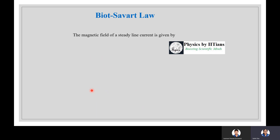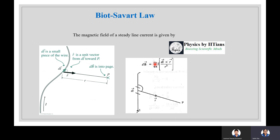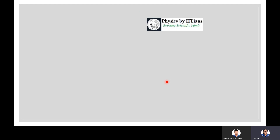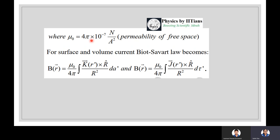We need the Biot-Savart law to find the magnetic field due to steady current. For a steady line current, the law gives dB = (μ₀/4π) I(dl × r̂)/r². Here dl is the small line segment, P is the point of observation, r is the distance, and μ₀ = 4π × 10⁻⁷ N/A², the permeability of free space.